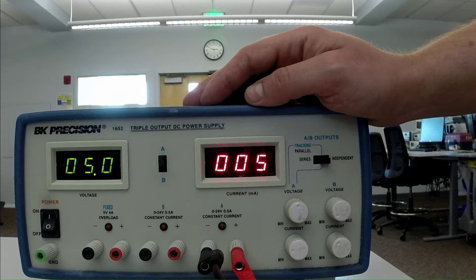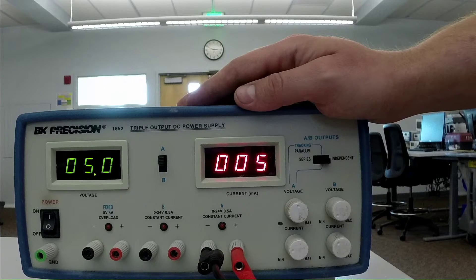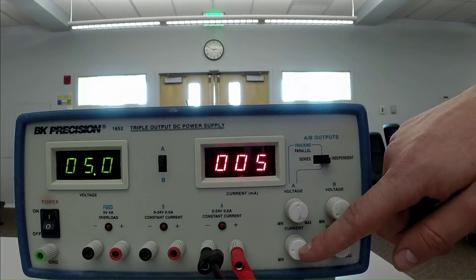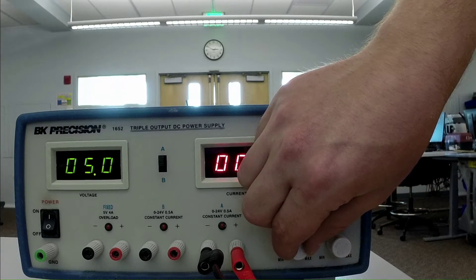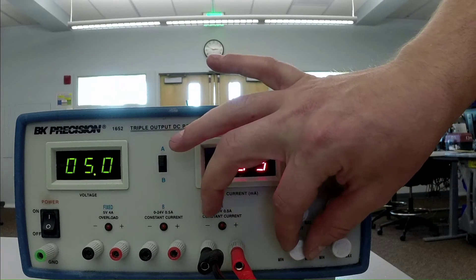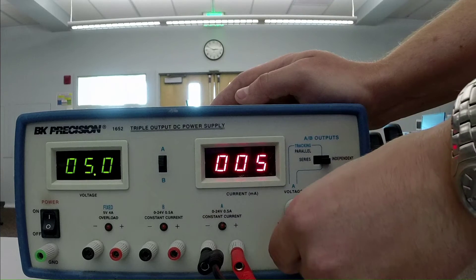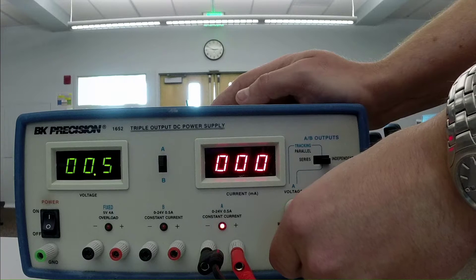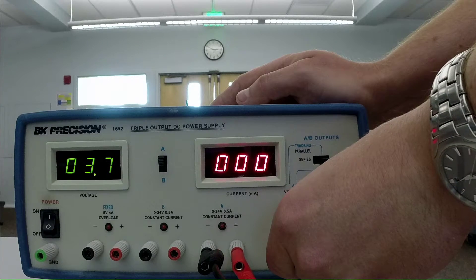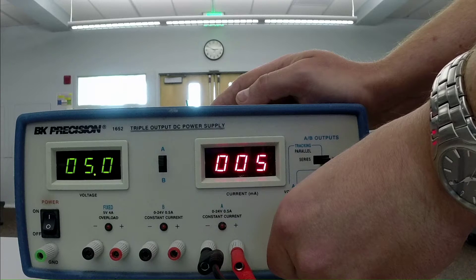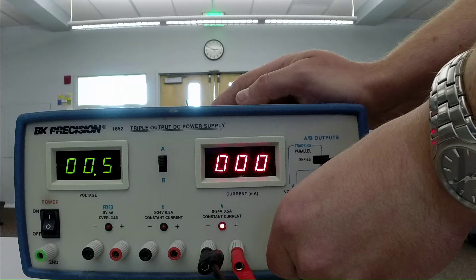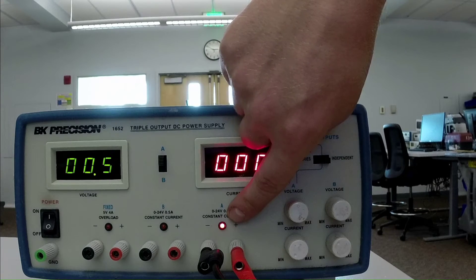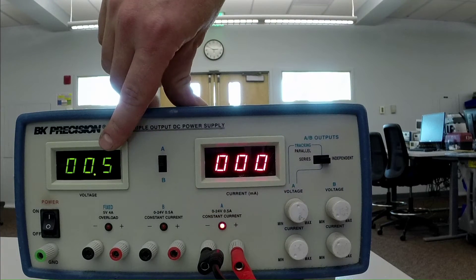Now we can limit the amount of current that this power supply will provide using the current limiting knob down here at the bottom. So watch what happens as I turn this down. You'll notice that it supplies that 5 milliamps until I turn the limit down too low. And we get this constant current light turning on.